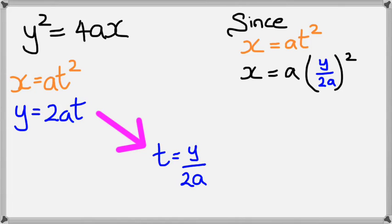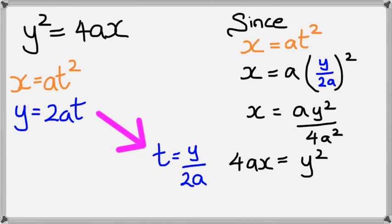And now it's just a matter of expanding and rearranging. So we're going to have a times y² divided by 4a². The a's cancel out each other, and in the end, you're going to be left with 4ax equals y². And as you can see, that's what the general equation of a parabola is.